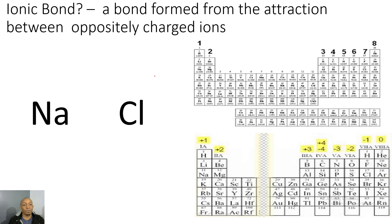An ionic bond is a bond formed from the attraction between oppositely charged ions. Let's do an example. First, sodium has one valence electron, and I'll demonstrate that with the Lewis dot structure. Then looking at chlorine — chlorine has seven valence electrons, and I'll show that for chlorine as well.